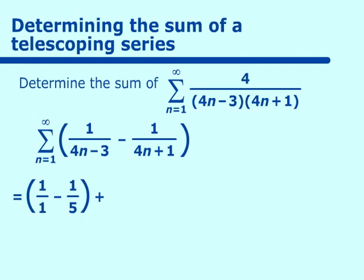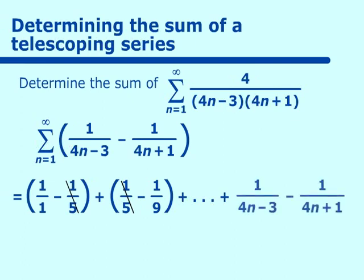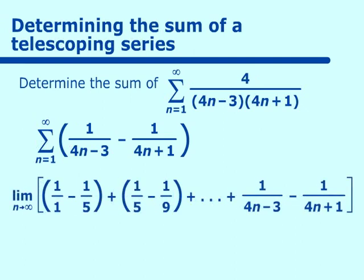Continue on forever, we get a collapse on this one, and our last two terms will be 1 over (4n-3) minus 1 over (4n+1). Taking the limit as n approaches infinity, everything collapses, the ends become zeros, and we get the sum of 1.